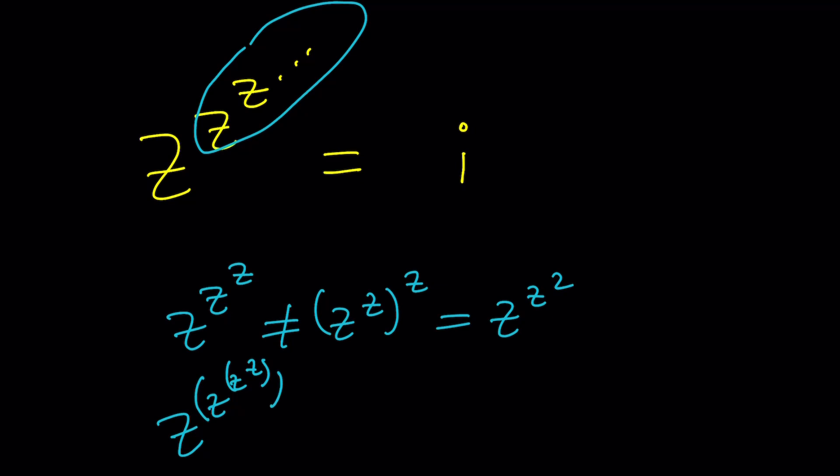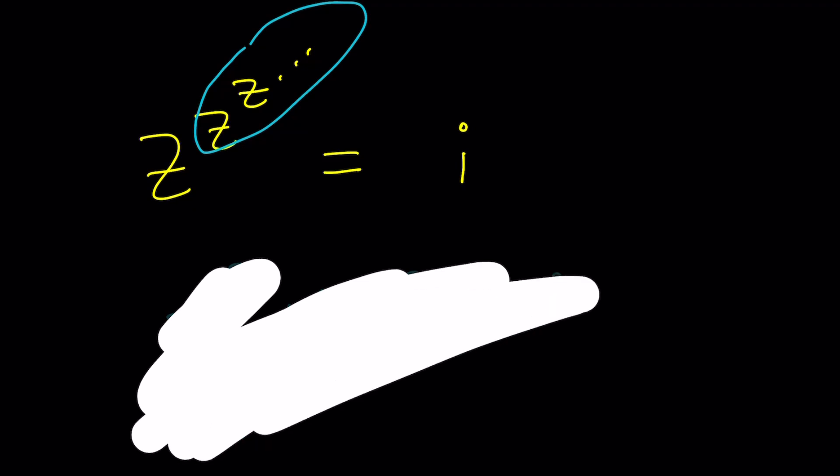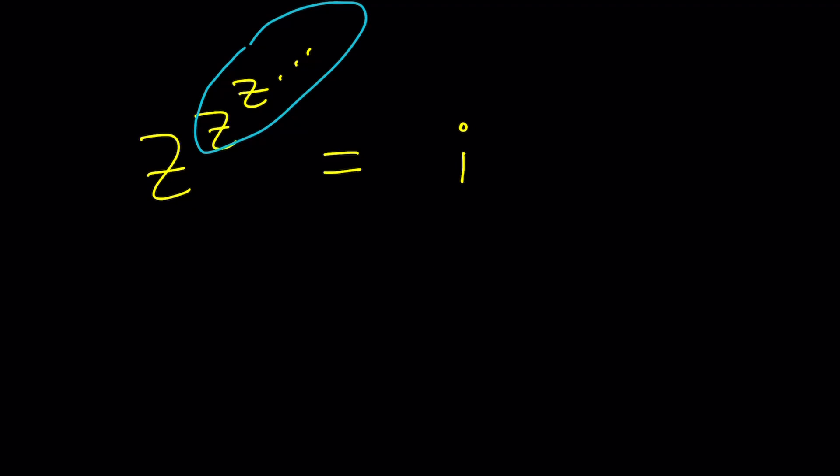Obviously some people find it ambiguous not very clear so on and so forth but anyways this is understood most of the time. So since the whole thing is equal to i that exponent is the same as the whole thing but it's also equal to i. So this kind of brings us to a finite result which is z to the power i equals i.